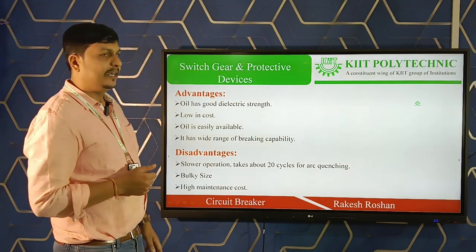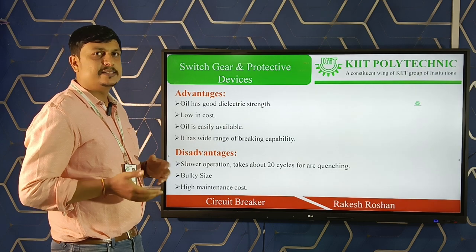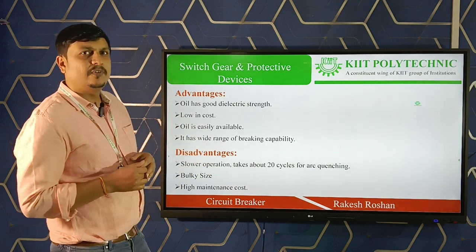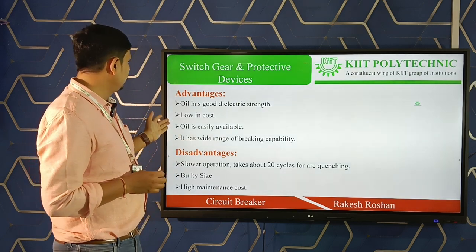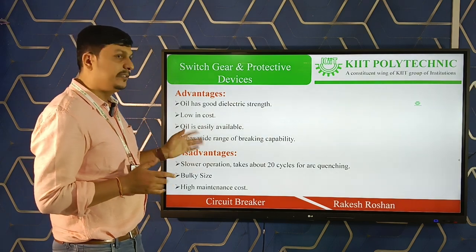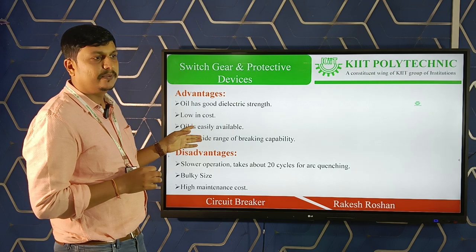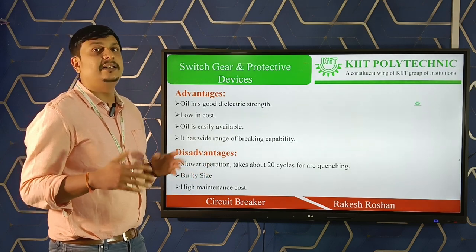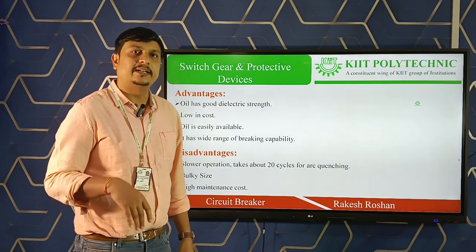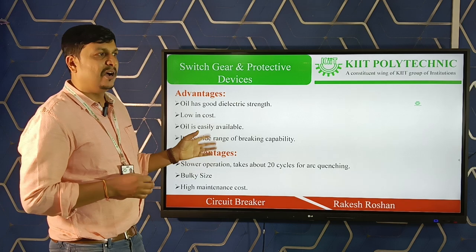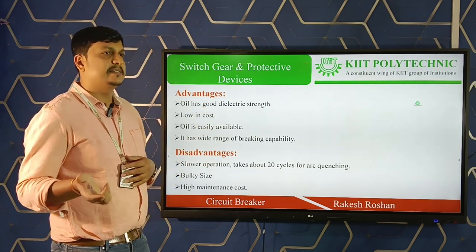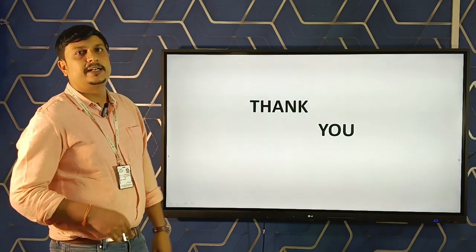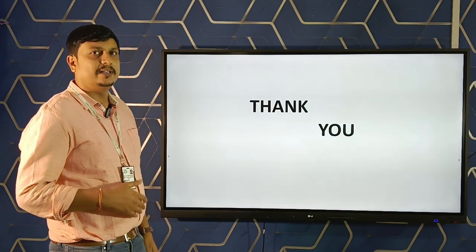Advantages of the oil circuit breaker include: it is cheaper compared to other circuit breakers, it has a wide range of breaking capacity, and oil is easily available. The disadvantages are: the size is bulky compared to other circuit breakers making transportation challenging, and maintenance cost is high since oil must be replaced at regular intervals. Due to these disadvantages, oil circuit breakers are largely being replaced by SF6 and vacuum circuit breakers. In the next class, we will study vacuum and other circuit breakers.